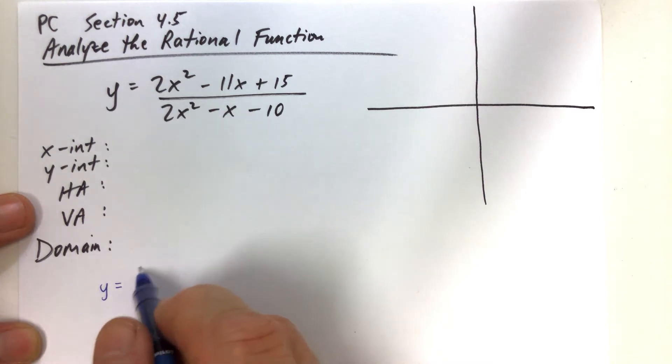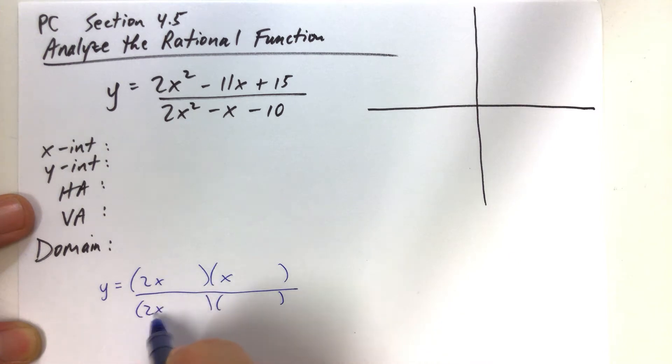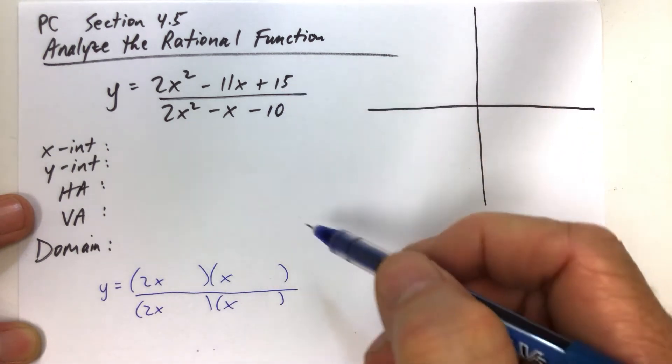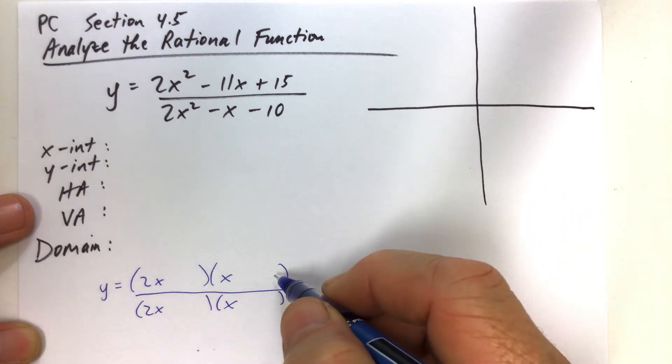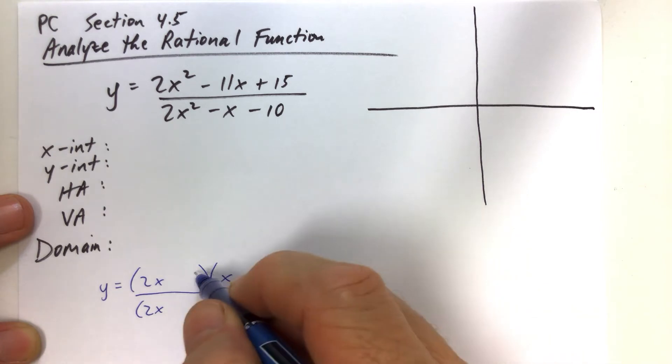So I'm going to rewrite the function down here, factoring the numerator. And if factoring is an issue for you, then maybe pause the video and see if you can give it a shot first. So let's factor the numerator first. So we have factors of 15 would be 5 and 3, so we have 3 and 5.